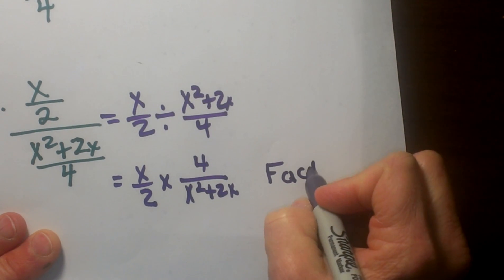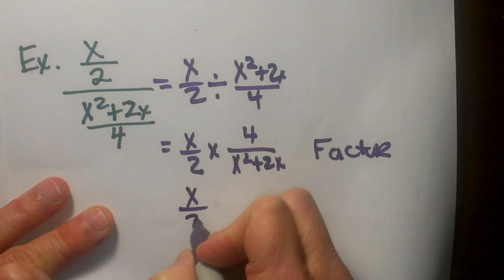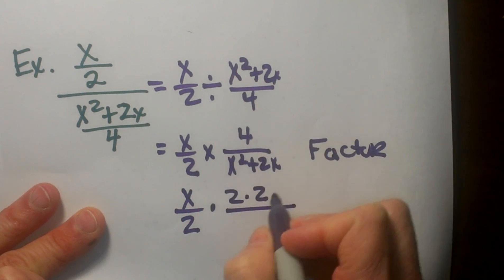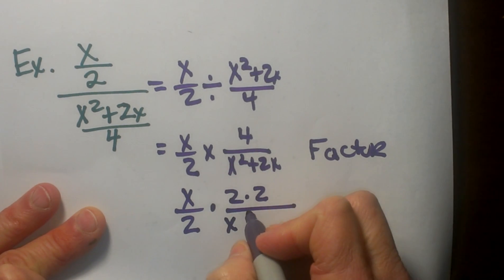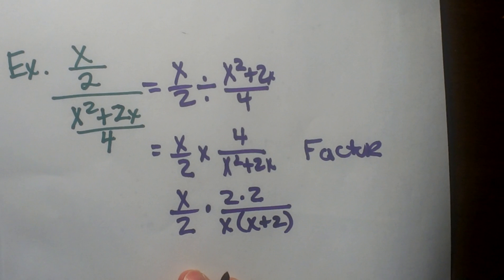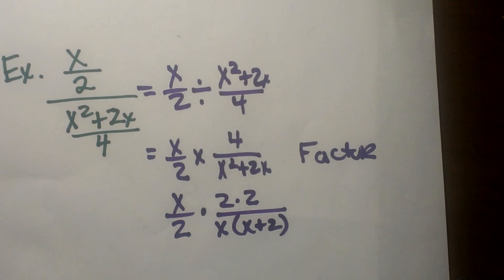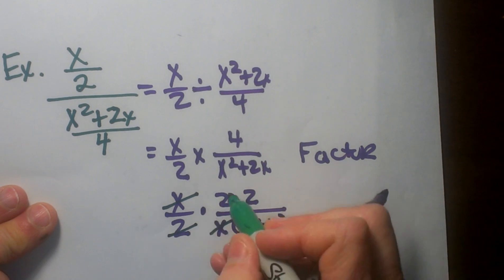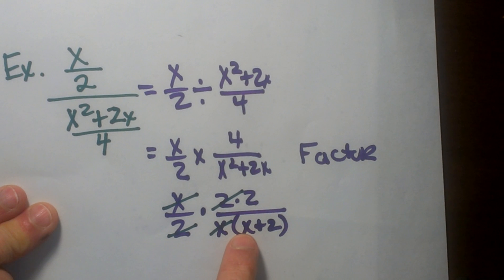So now I am going to try to find all my factors and try to cancel those factors. x over two does not factor — it is down to prime factors. But four is two times two, and then in the denominator, x squared plus two x, I can factor out an x and I am left with x plus two. Now I can cancel at this point. Any factor that is common in the numerator I can cancel with a factor in the denominator. So I can cancel this x with this x, a two and a two, and I am left with a two on top in my numerator and x plus two on the bottom.